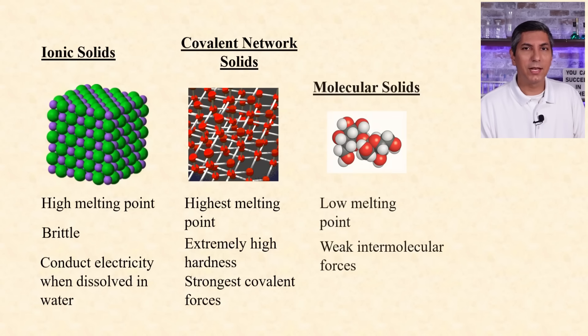Molecular solids have individual molecules as units, so that makes them different from ionic solids or covalent network. Sugar is a good example. These have relatively weak forces between molecules and relatively low melting points.